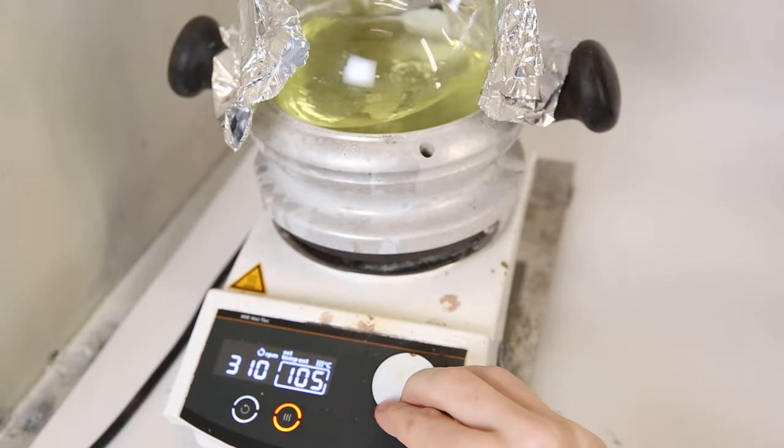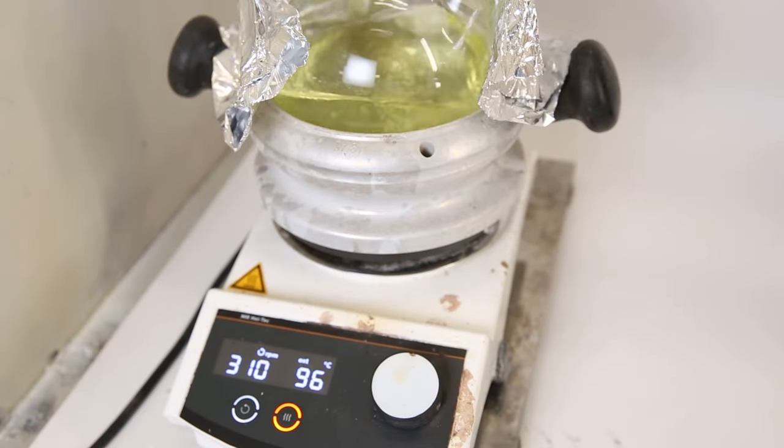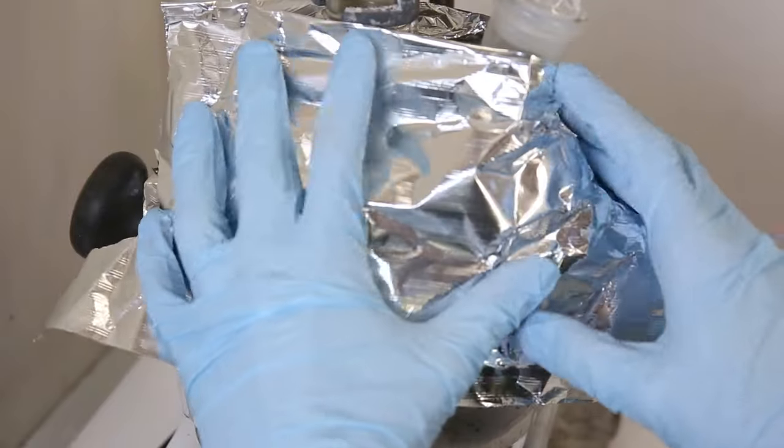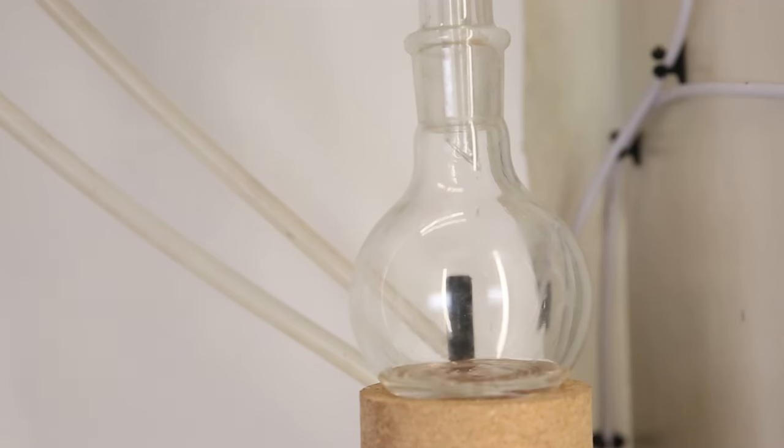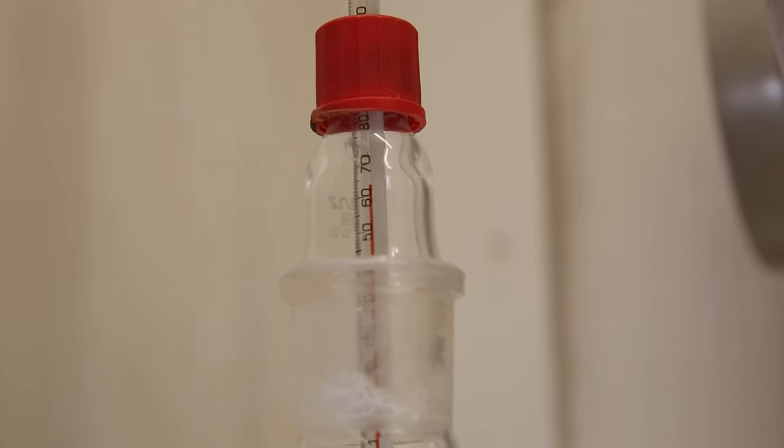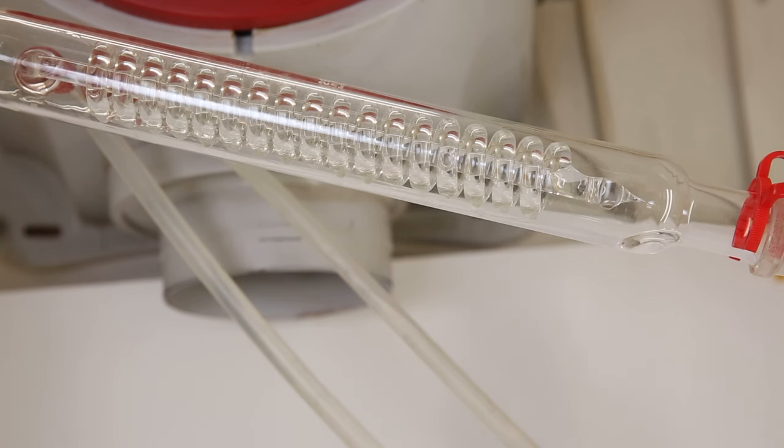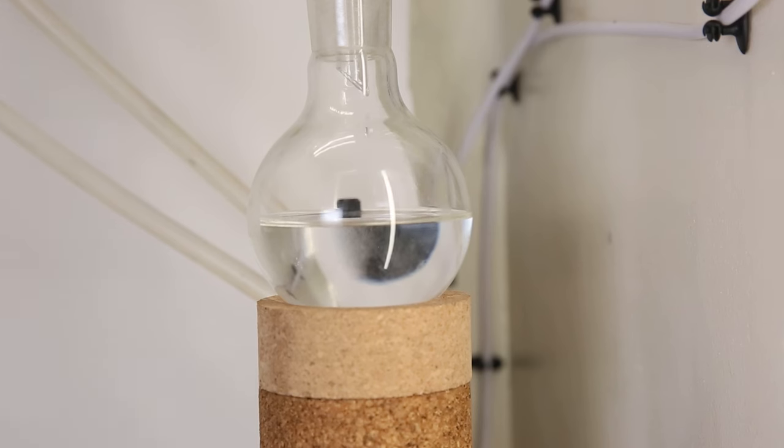I slowly increased the temperature to get the next fraction to come over. Another liquid started coming over quickly, and the thermometer stabilized around 65°C. Most likely, this is isohexane, with a boiling point of 60°C, and hexane, with a boiling point of 69°C.